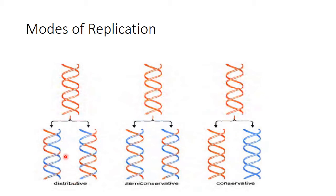The dispersive method of replication explains that the parental DNA distributes randomly among the daughter DNAs, and there is no fixed ratio of distribution among the daughter DNA. This distribution is therefore called the distributive or dispersive mode of replication, or sometimes the non-conservative method of replication.